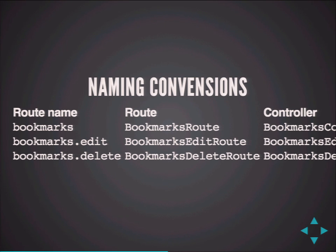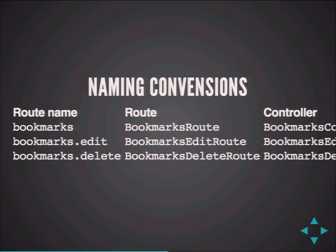The naming conventions are such that when I have a route named 'bookmarks', I can make a route class called BookmarksRoute. The controller corresponding to that will be BookmarksController, the view will be BookmarksView, and the template will be 'bookmarks' — no surprise. So all of this works nicely together.